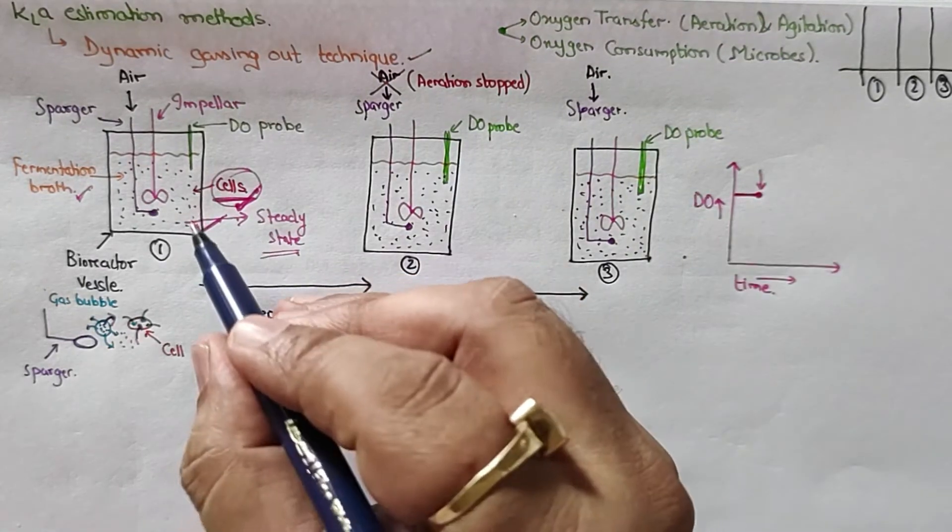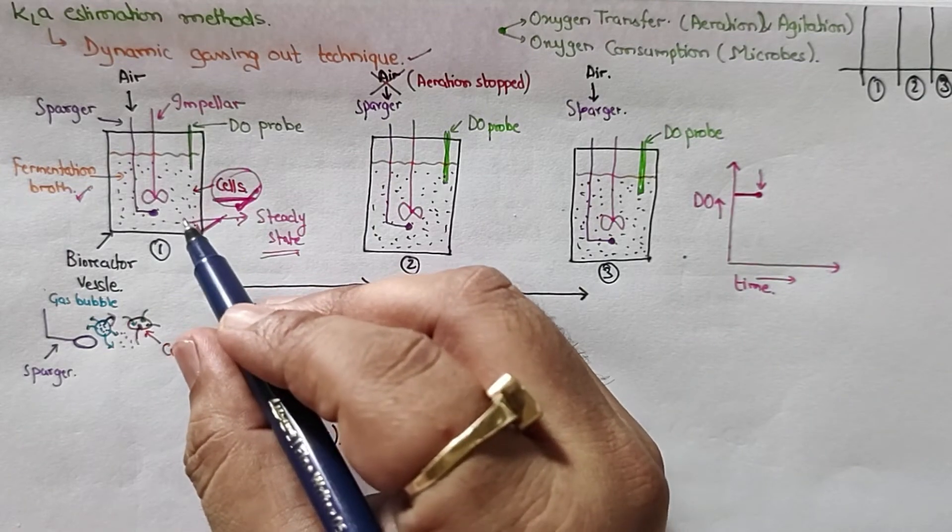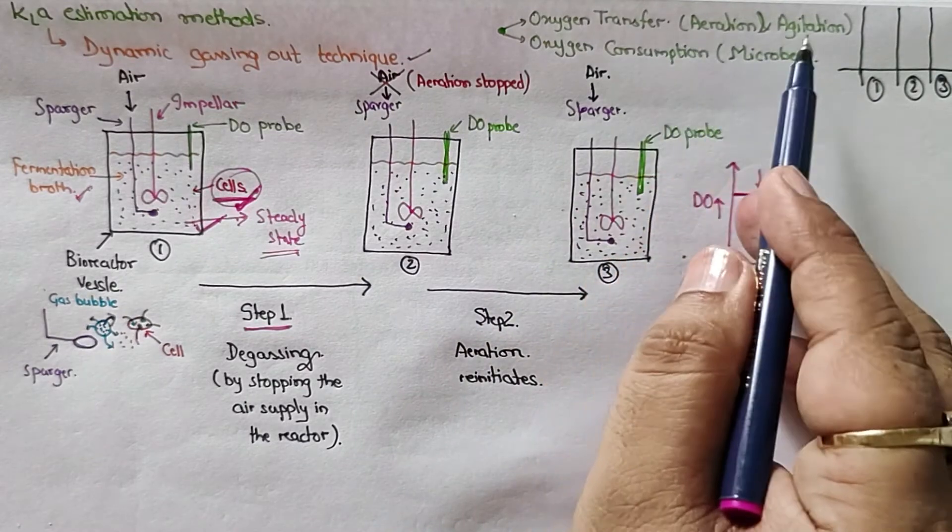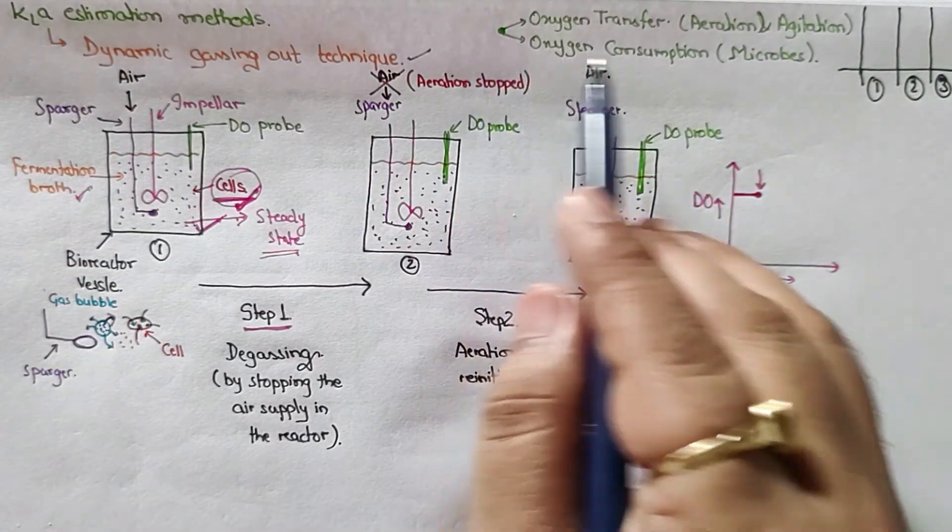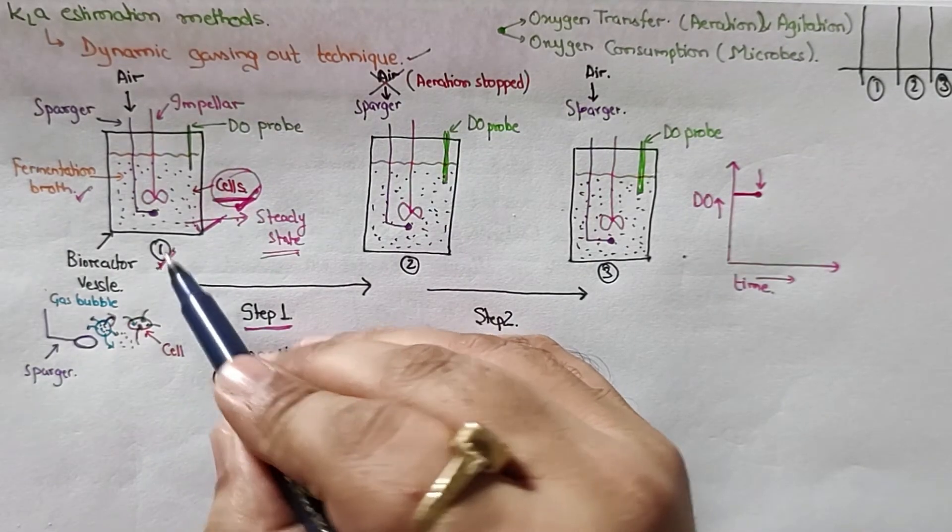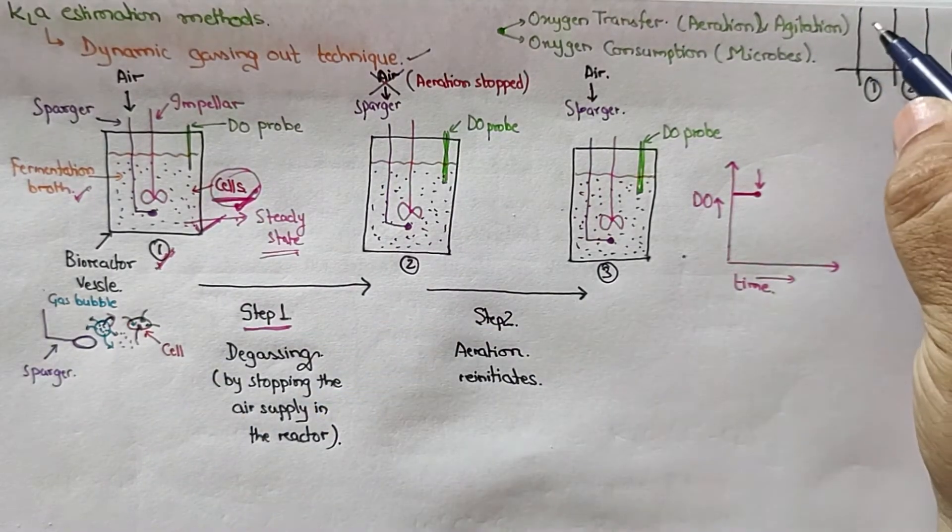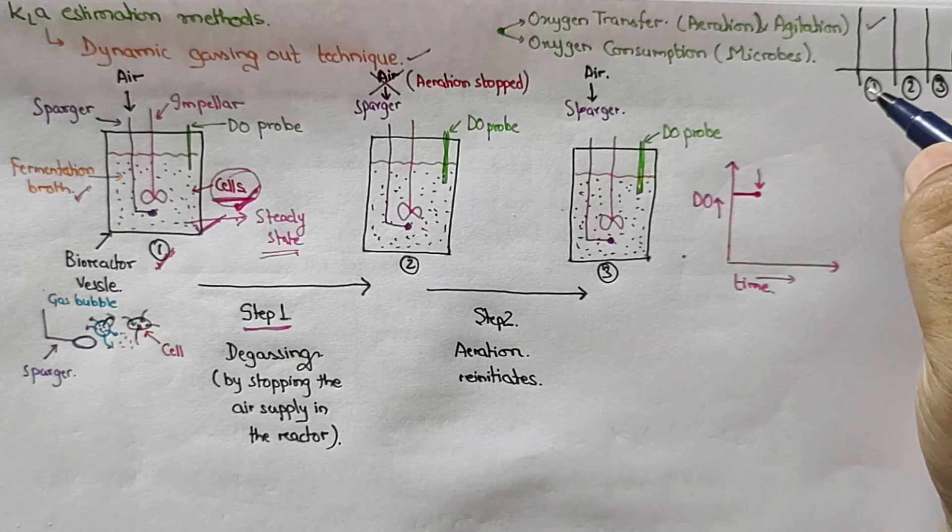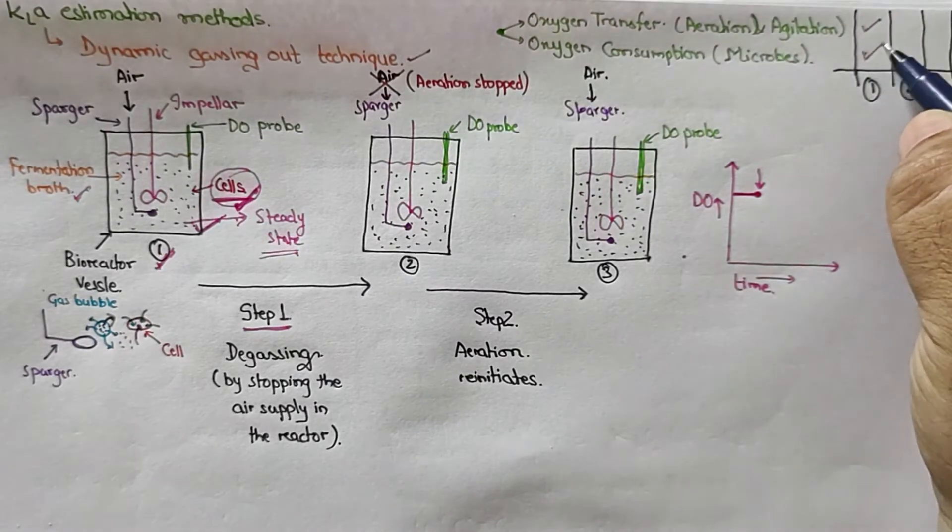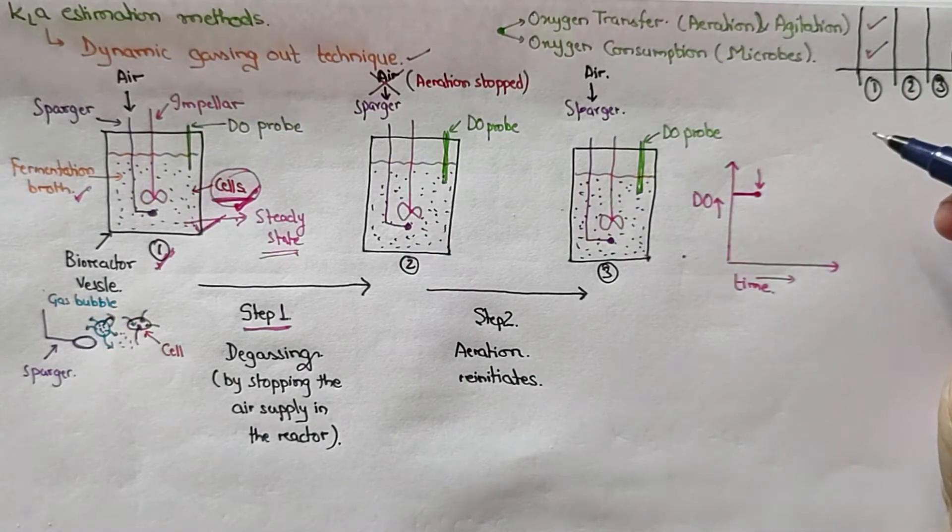In this system two different processes are going on. First process is oxygen transfer that is due to the aeration and the agitation. Second one is the oxygen consumption. So at this point, point number one, there is oxygen transfer going on because of the agitation and the aeration, and microbes are also utilizing the oxygen.